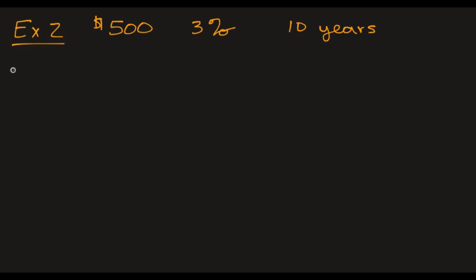So for starters, we're going to do annually. So after 10 years, we have $500, 1 plus 0.03 to the 10th power. Go ahead and find that in the calculator.